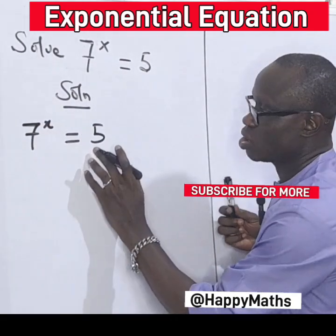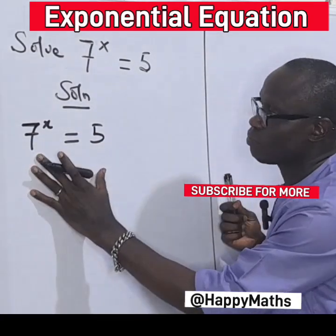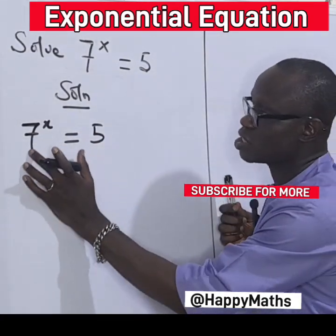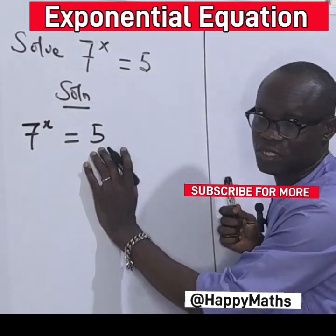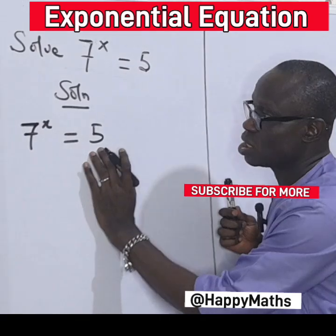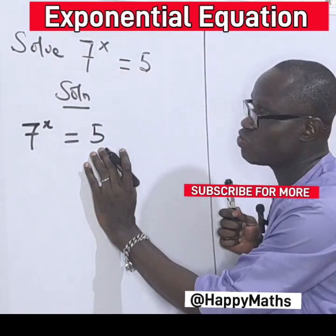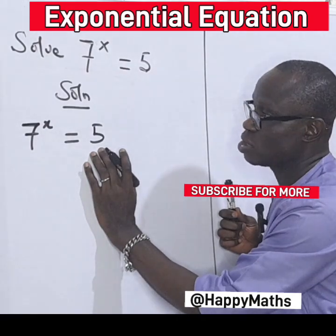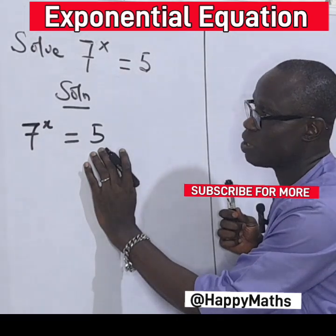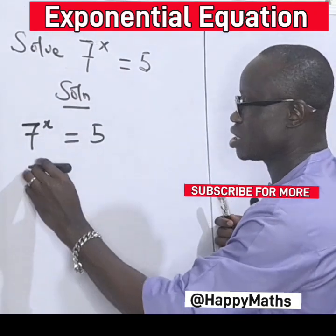Now, no number — this is 7, this is 5 — those are both prime numbers. There is no way we can raise any of them to be able to match the power. So what do we do? Let's introduce ln.